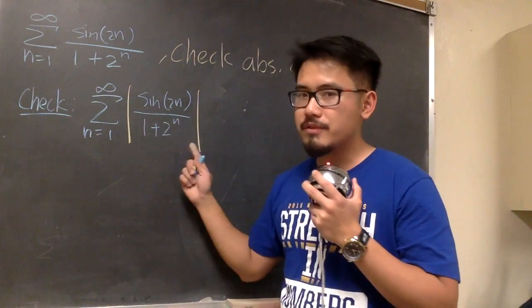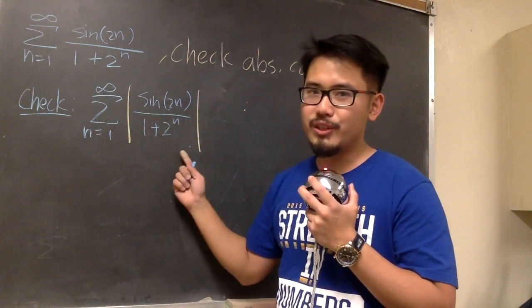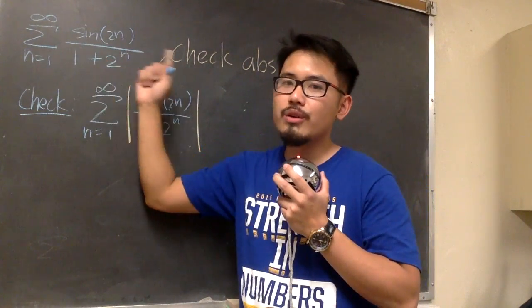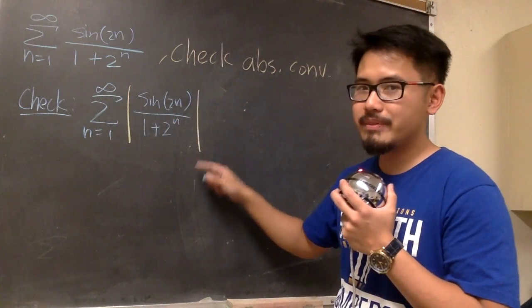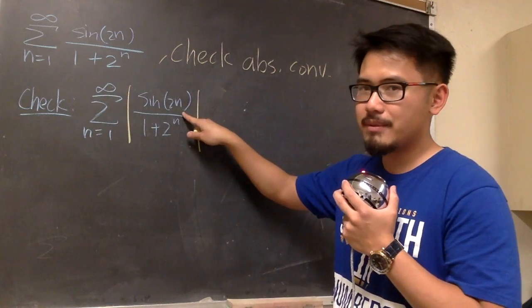If we have this absolute value, and if this converges, of course, the original converges as well. And the good thing here is that, when we have this absolute value, we have this sine factor inside.